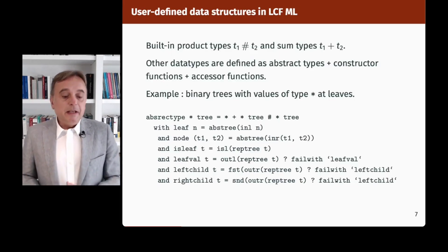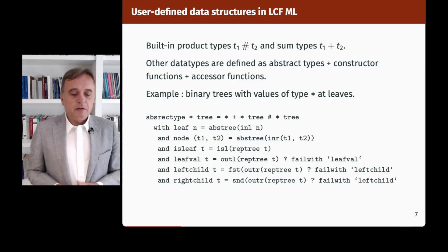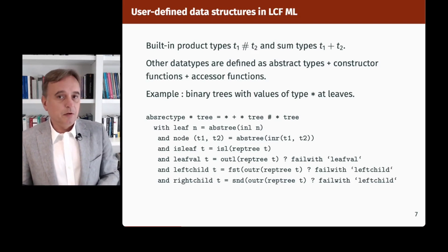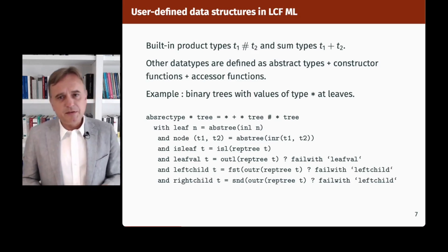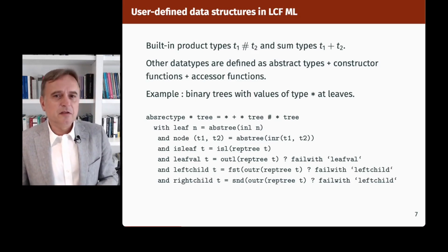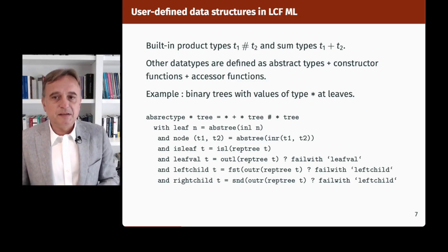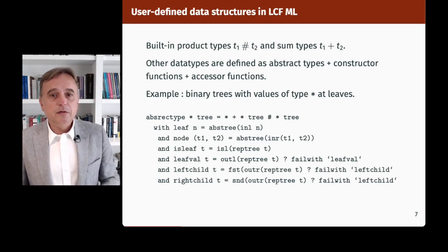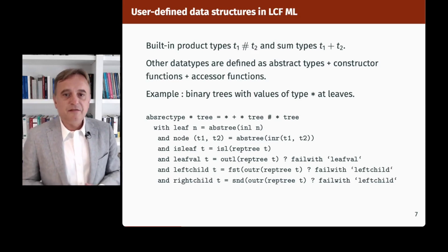That was really the beginning of ML. But one thing was still missing: support for user-defined data structures. In LCF ML, there are built-in product and sum types, but all other data types are defined as abstract types plus constructor functions plus accessor functions. For instance, binary trees with values of type star — either a leaf or a pair of two sub-trees — had constructor functions leaf and node, predicates like is_leaf, and projection functions leaf_val, left_child, right_child, that could all fail at runtime.